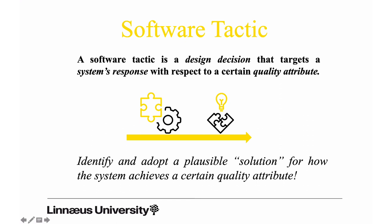What a tactic does more in practice is form a plausible solution for a quality attribute. The process here is in two steps: first you identify, and then you adopt one of these plausible solutions for the achievement of a quality attribute.